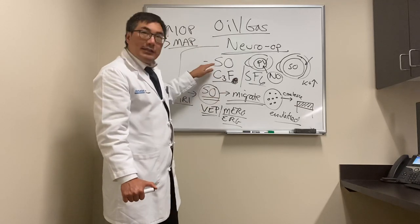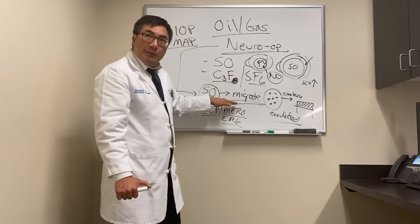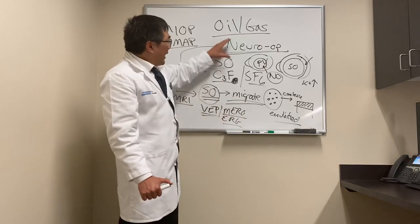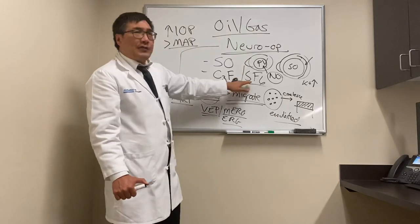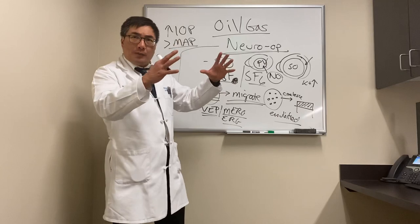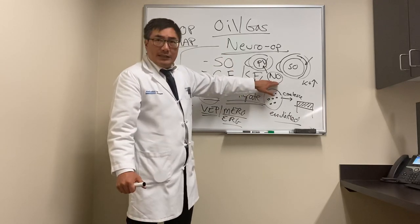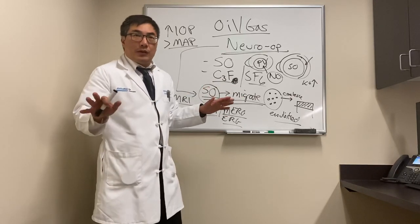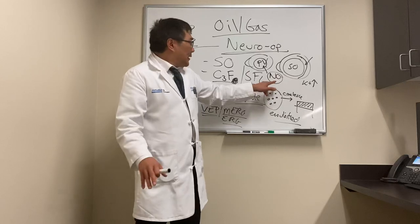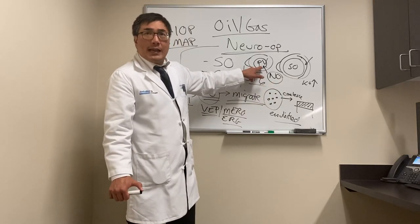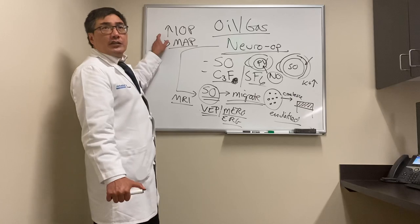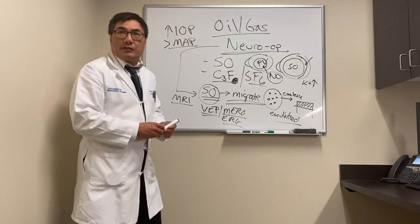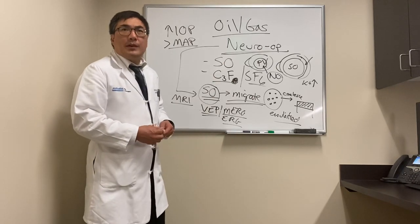In summary: silicon oil causes retinal toxicity, can migrate, and requires MRI imaging and electrophysiology to detect. Intraocular gas — C3F8 and SF6 — expands normally, but if nitrous oxide is used in any subsequent anesthesia procedure (knee replacement, hip surgery, or anything else), it will diffuse into the gas bubble, elevate intraocular pressure beyond the critical MAP threshold, and produce a central retinal artery occlusion. Neuro-ophthalmologists need to know about oil and gas.